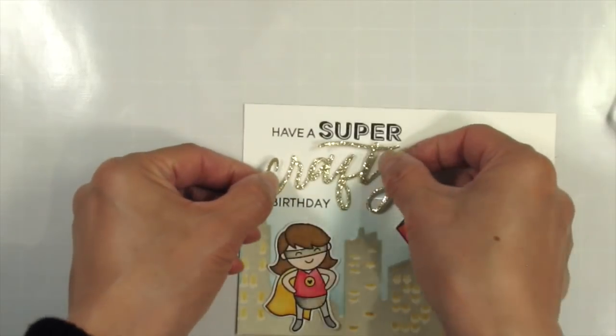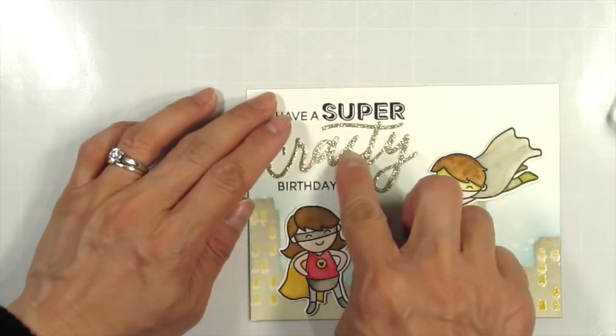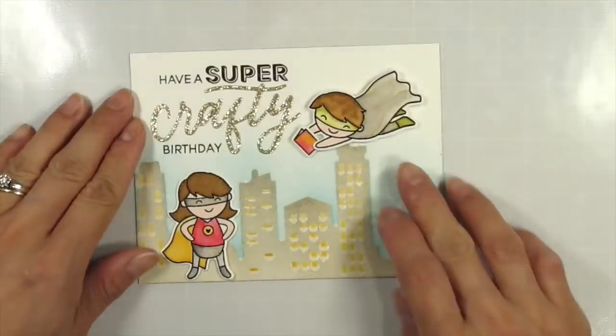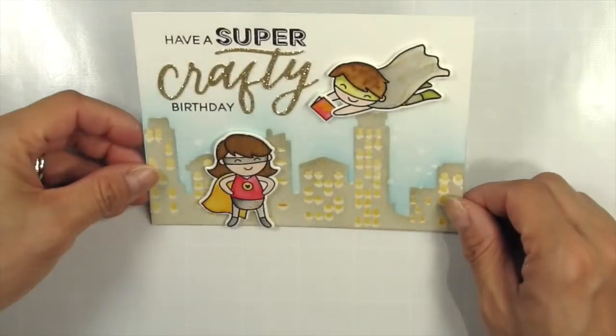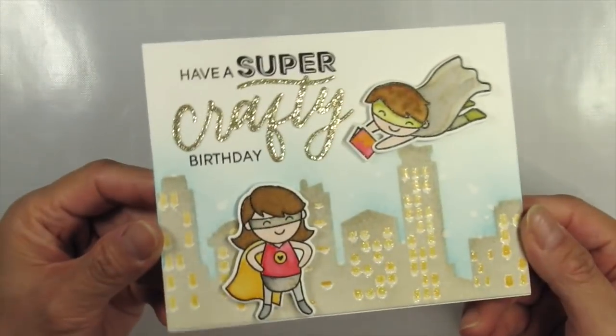Then I use foam tape to attach the super dudes to the card. I just make sure that the boy's cape is the same distance from the edge of the card as the sentiment. Then I stand the card till the girl is standing right up on the edge and centered with the sentiment before securing her to the panel. I attach the panel to the card base and now my card is done.